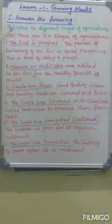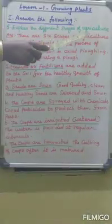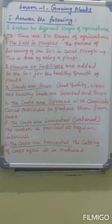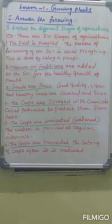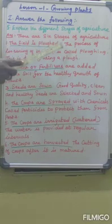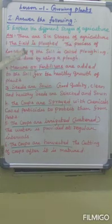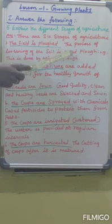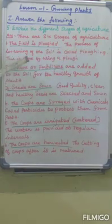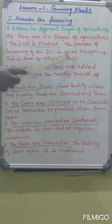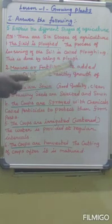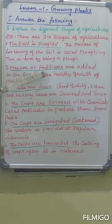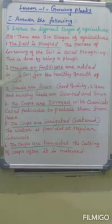Fifth question: Explain the different stages of agriculture. Answer. There are six stages of agriculture. First one: the field is plowed. The process of loosening of the soil is called plowing. This is done by using a plow. Second: manure or fertilizer are added to the soil for the healthy growth of plants.